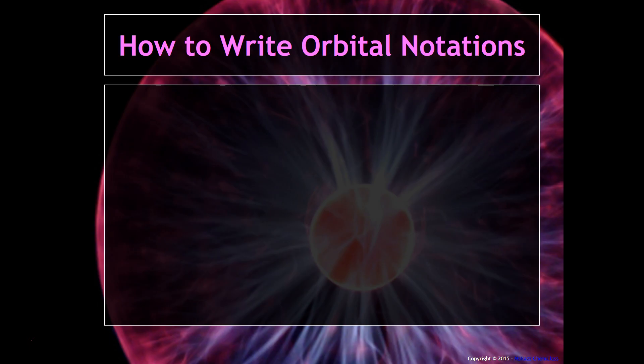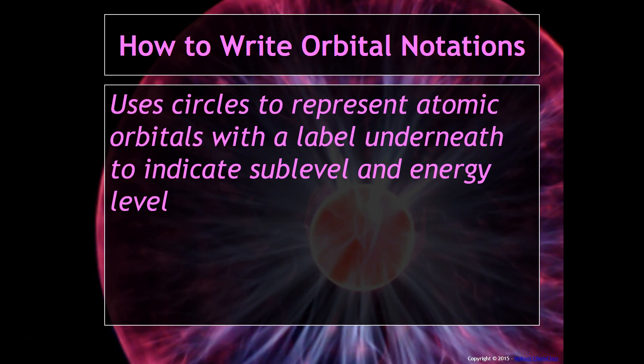Now let's talk about how to write something called orbital notations. So orbital notations are a little different than electron configurations because it's more of a pictorial representation. It now uses circles, or sometimes lines, to represent atomic orbitals. And there's also a label underneath that indicates the sublevel and energy level.